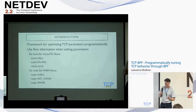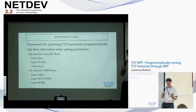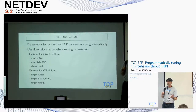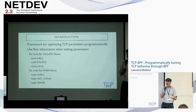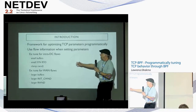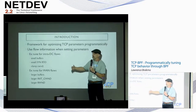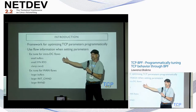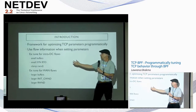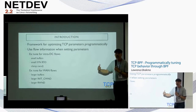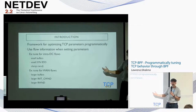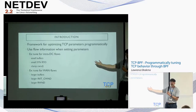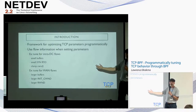TCP BPF is a framework for programmatically optimizing TCP parameters. We can use flow information to make decisions — looking at IP addresses and port numbers. For example, we could tune for flows within a data center: we know the flow is within the data center, so we can force small buffers so they cannot grow on their own. We can also set a small SYN RTO — rather than waiting one second if the SYN packet is lost, we could wait just 10 milliseconds, since we know it should get there much faster in a data center.